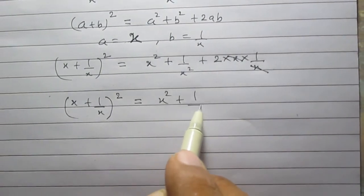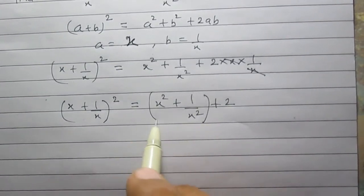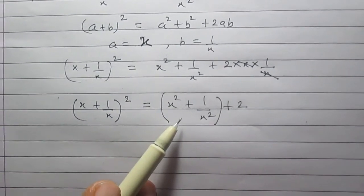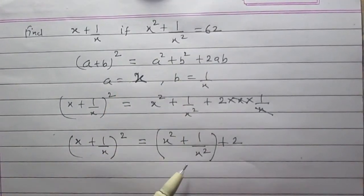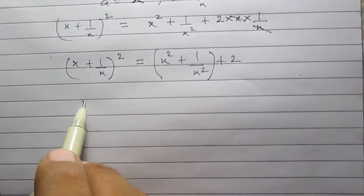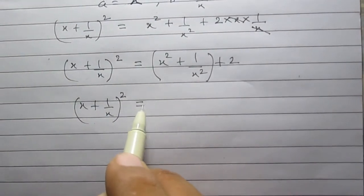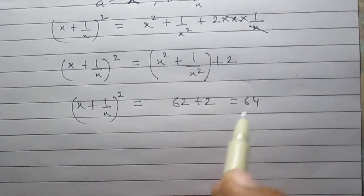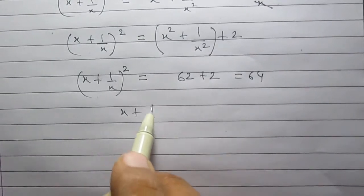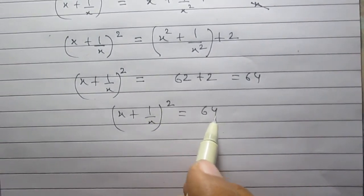Here we can substitute the value of x square plus 1 upon x square, it is 62. So we get x plus 1 upon x whole square is equal to 62 plus 2, which is 64.